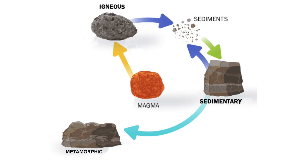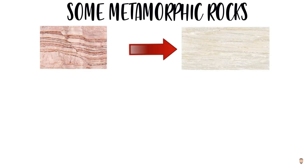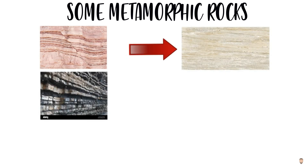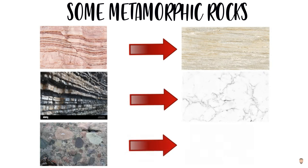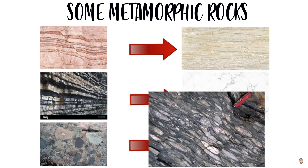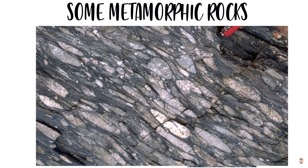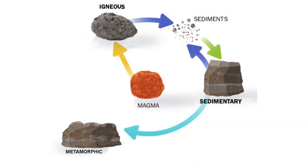These new rocks are more compact and crystallized than ordinary sedimentary rocks. For example, sedimentary sandstone transforms into metamorphic quartzite, limestone turns into marble, and conglomerates transform into metaconglomerates. The last one is fascinating because you can see how in these metaconglomerates, the gravels get completely flattened due to this pressure.